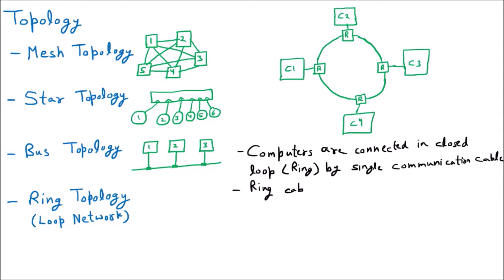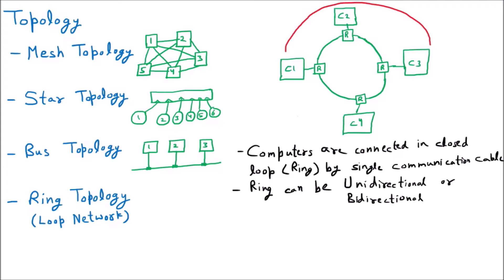The second thing is that ring topology can be unidirectional or bidirectional. By default, the topology is unidirectional. Unidirectional means only one way we can send data. For example, if we start with C1 in the clockwise direction, then if C2 wants to send data to C3, it will send the data clockwise. Similarly, if C2 wants to send to C4, the same wire will be used. The other direction is not possible because we are assuming it is unidirectional — only one direction.